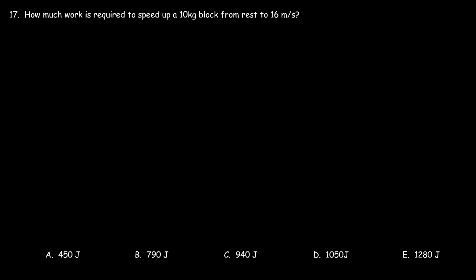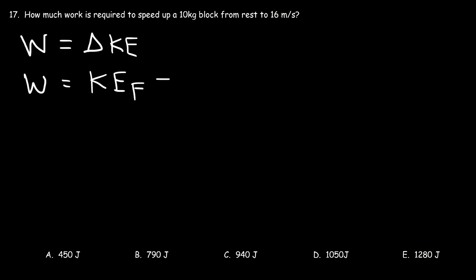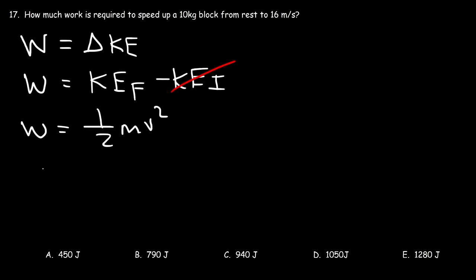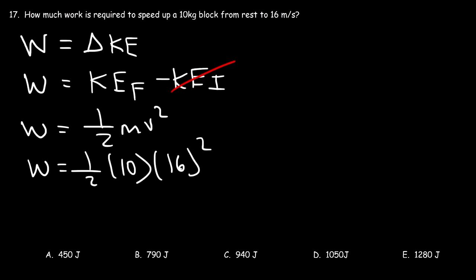Number 17: how much work is required to speed up a 10 kg block from rest to 16 m/s? Work equals the change in kinetic energy. Since the block starts from rest, KE_initial = 0, so W = ½mv² = ½ × 10 × 16² = 5 × 256 = 1280 joules. Answer E.